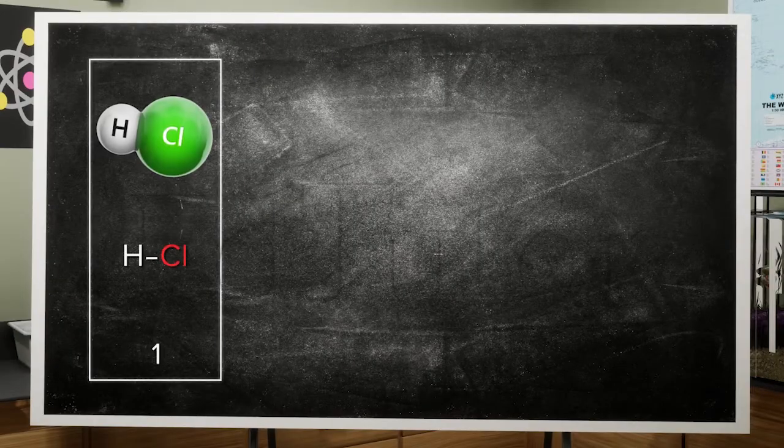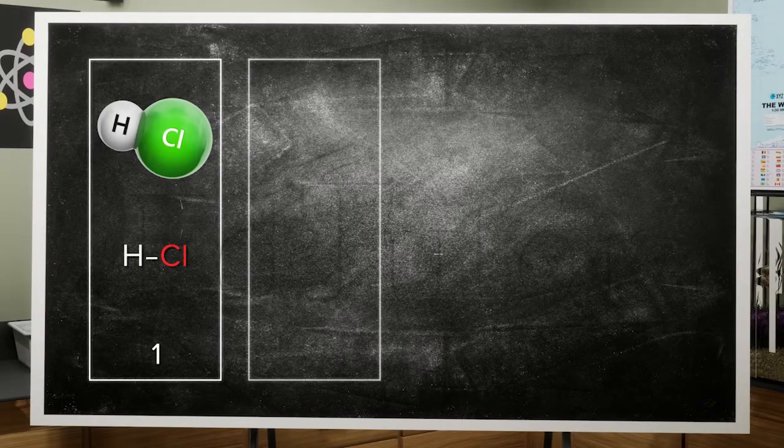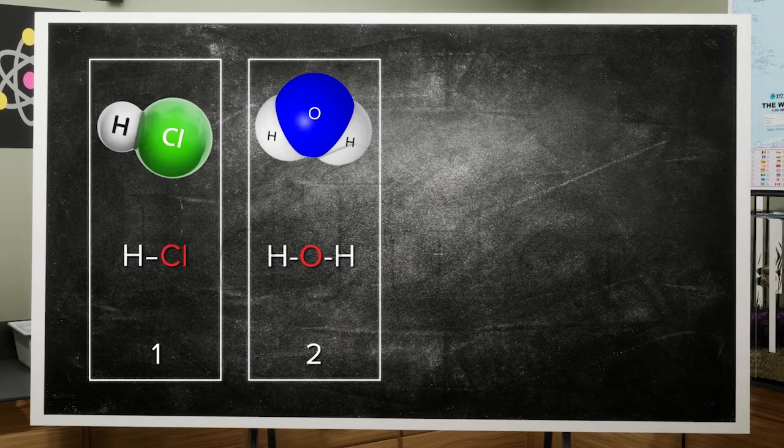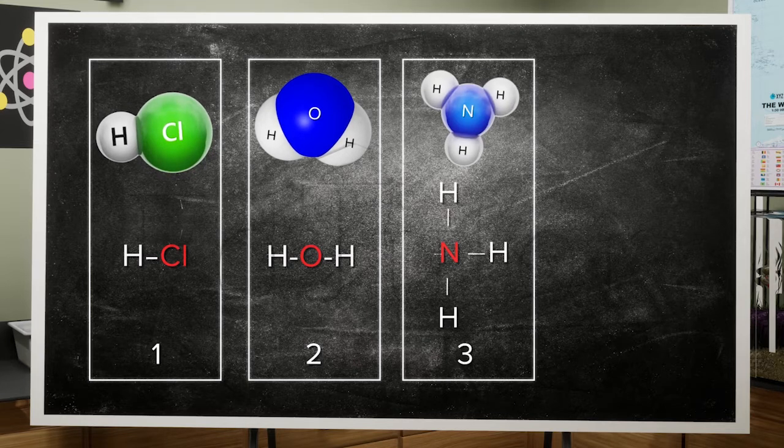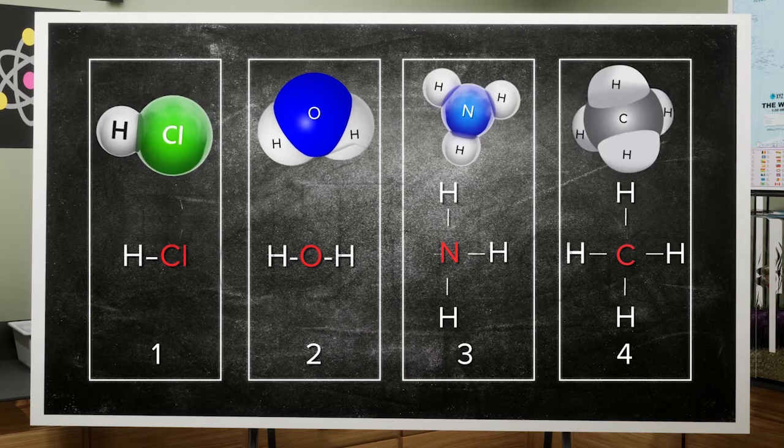So briefly, the valency of chlorine is one, oxygen has two, nitrogen is three, while carbon's valency is four.